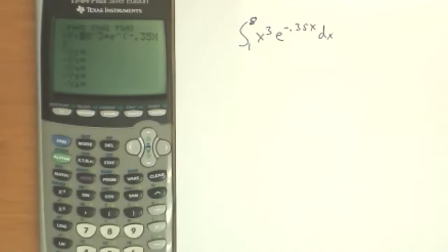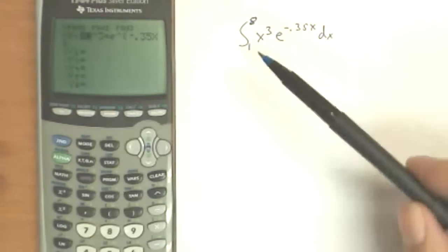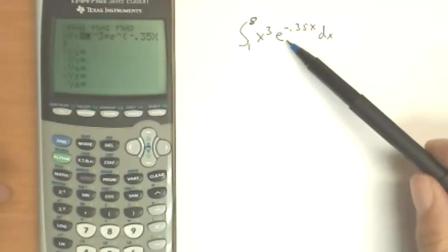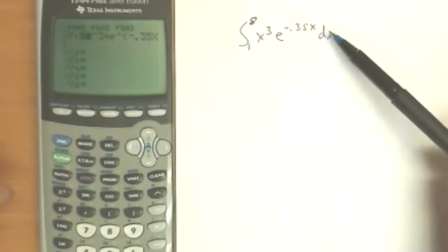Using our calculator to find a definite integral is very simple. So I'm going to show with this example here, the integral from 1 to 8 of x cubed e to the negative 0.35x dx.